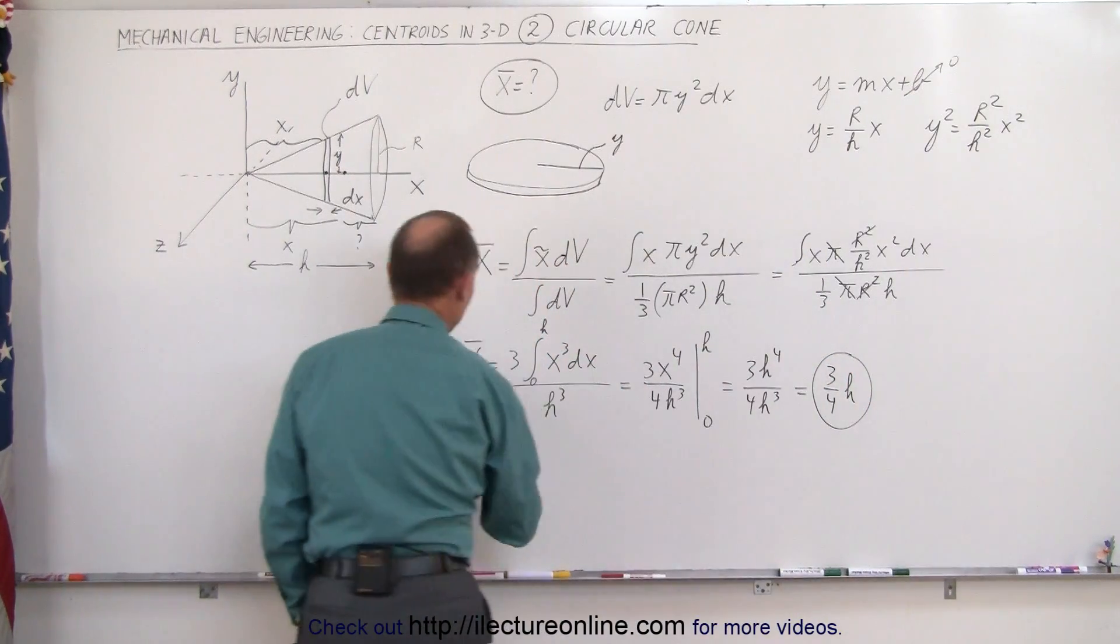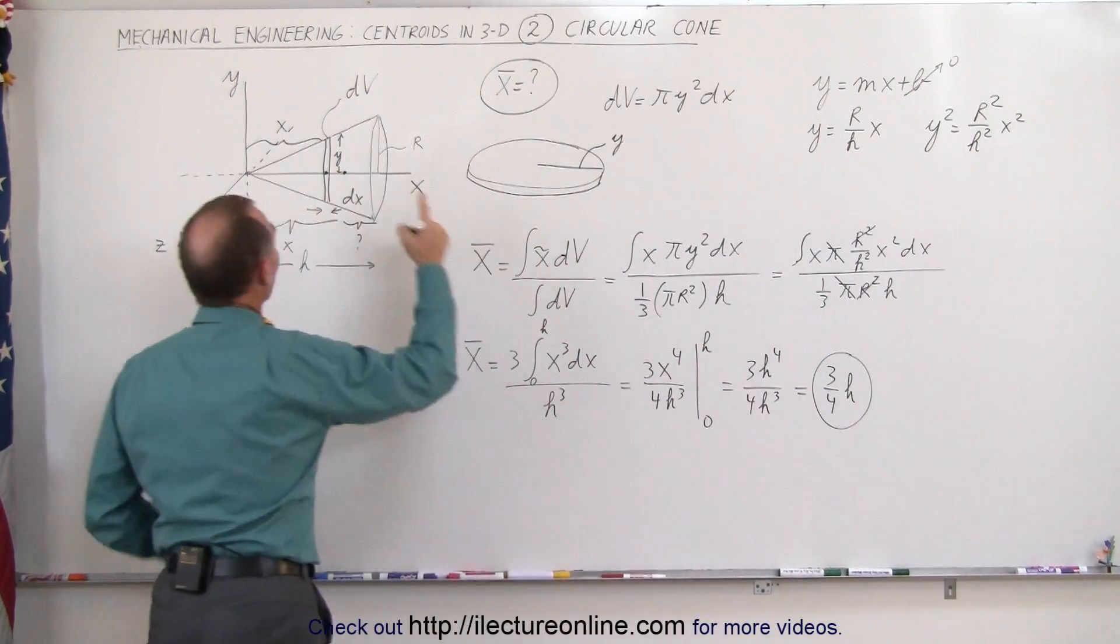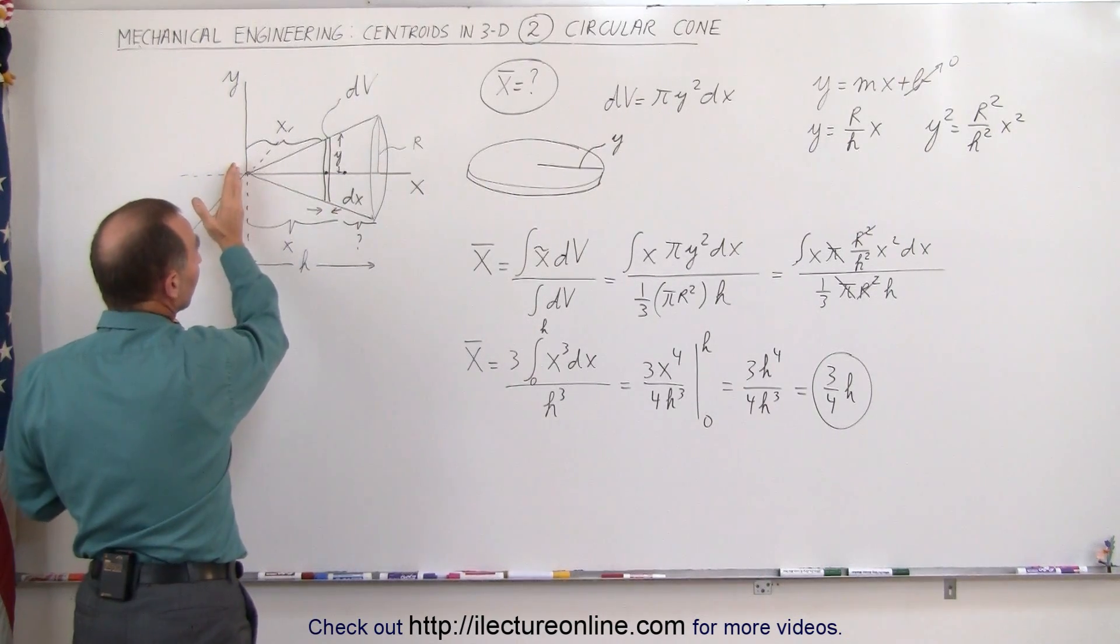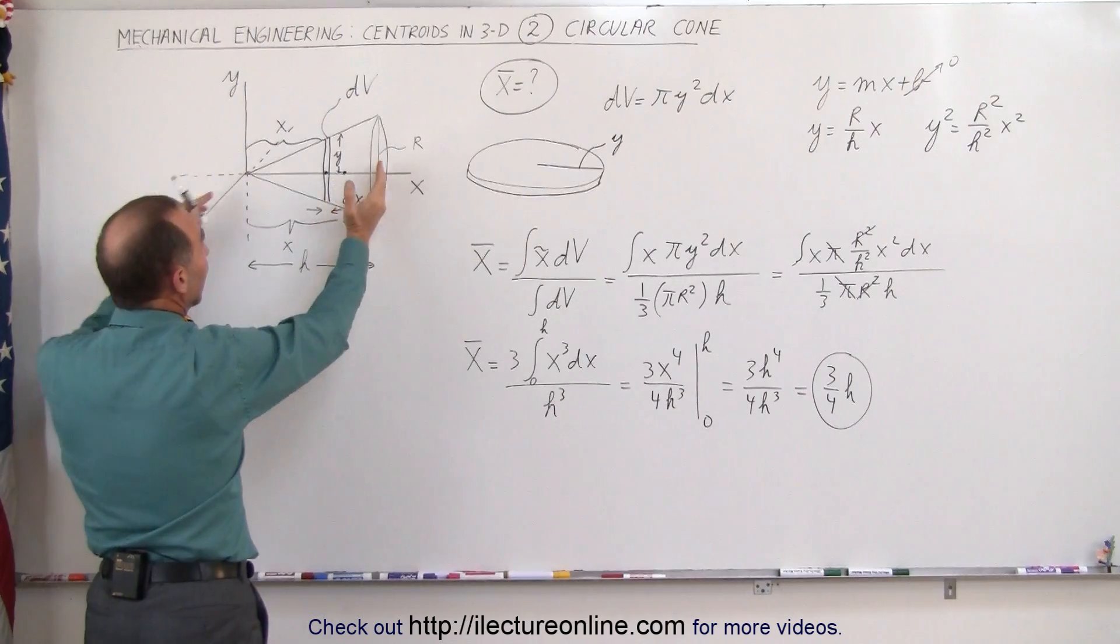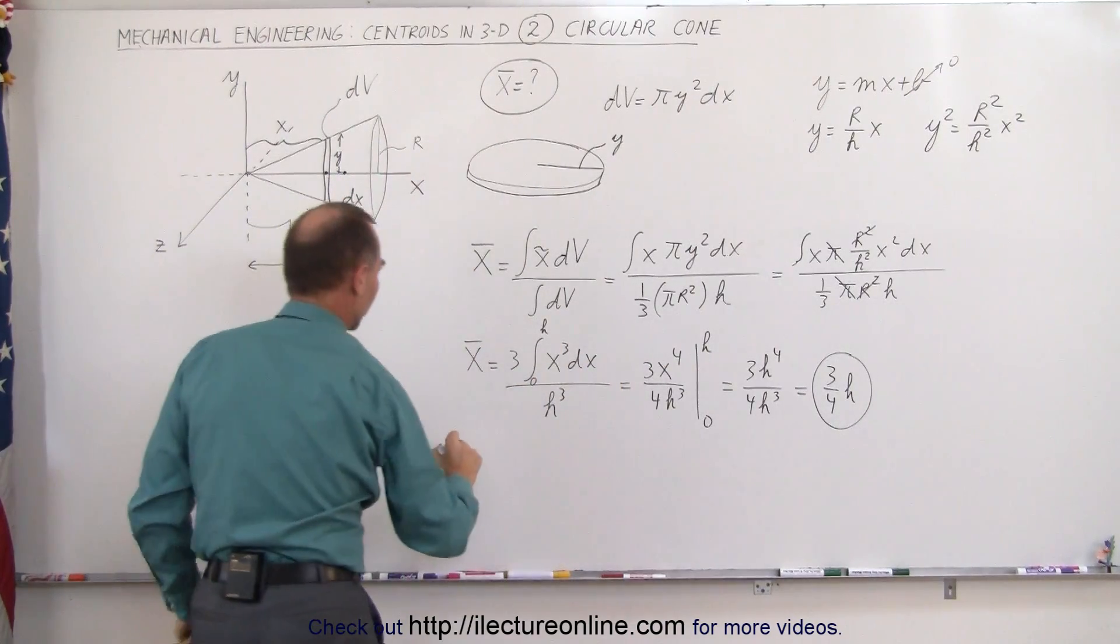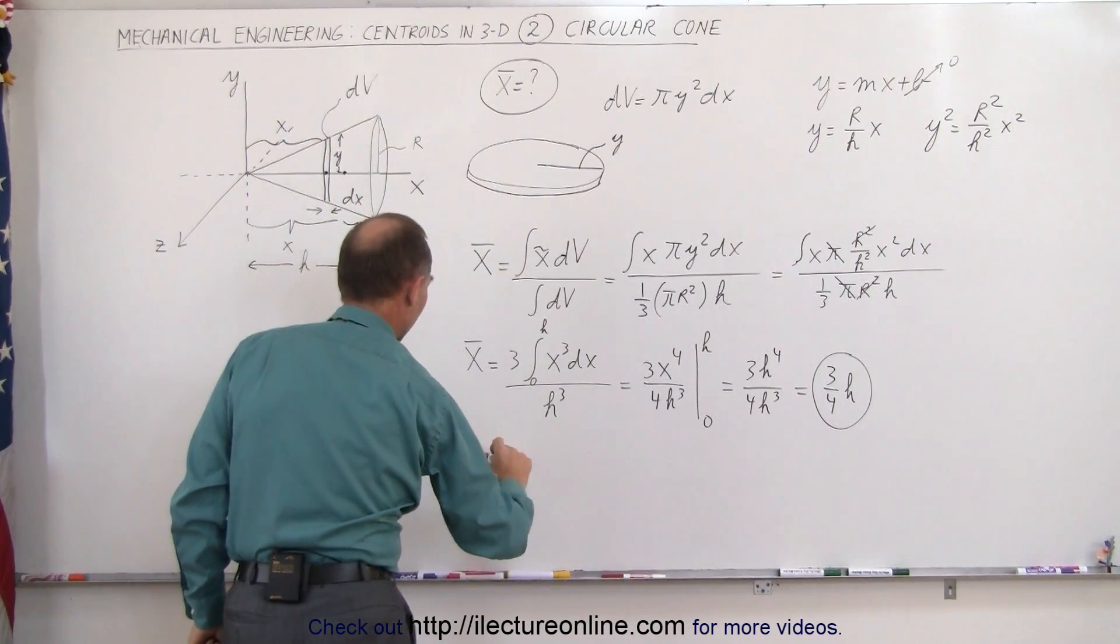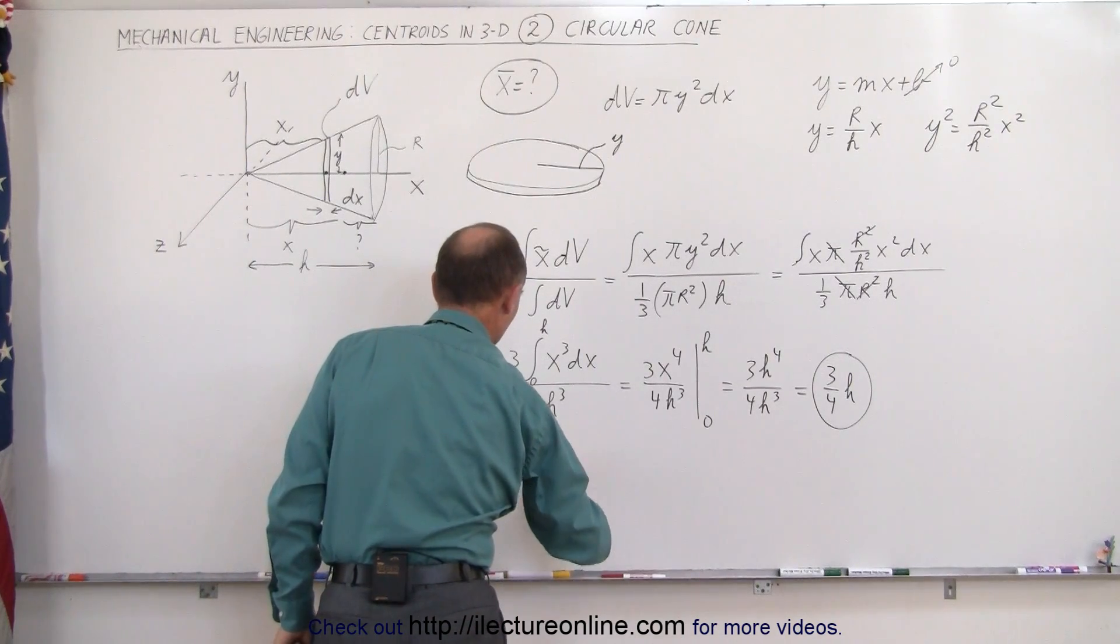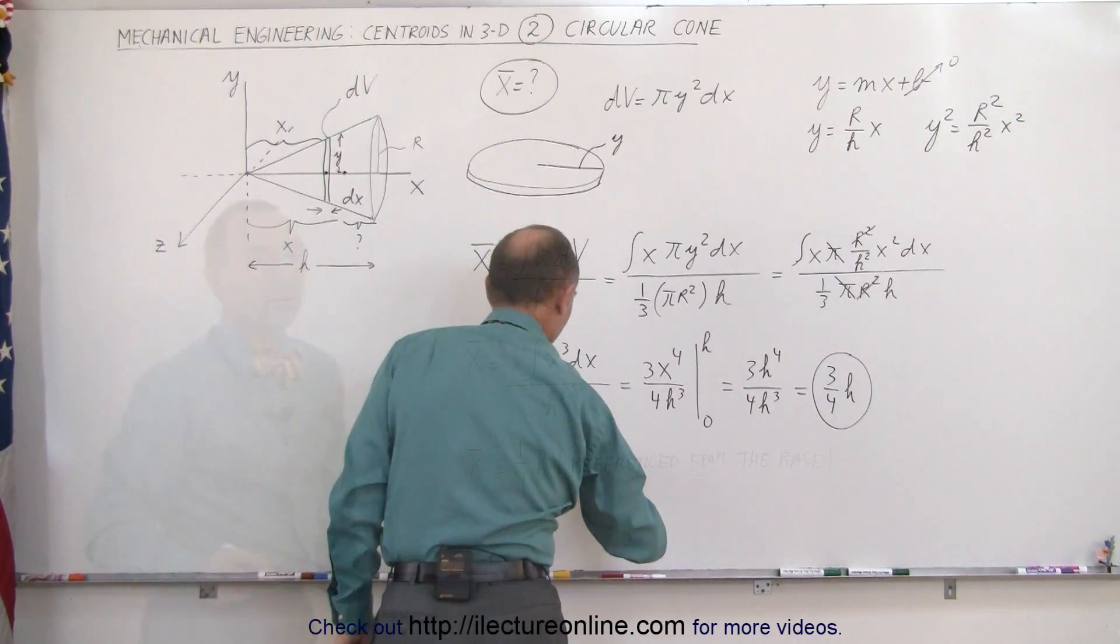Be careful here, that is the x-coordinate of the centroid of this circular cone in reference to the origin, but in reference to the base, it would be h minus that quantity, so therefore we can write that x is equal to 1 quarter h, in reference from the base.